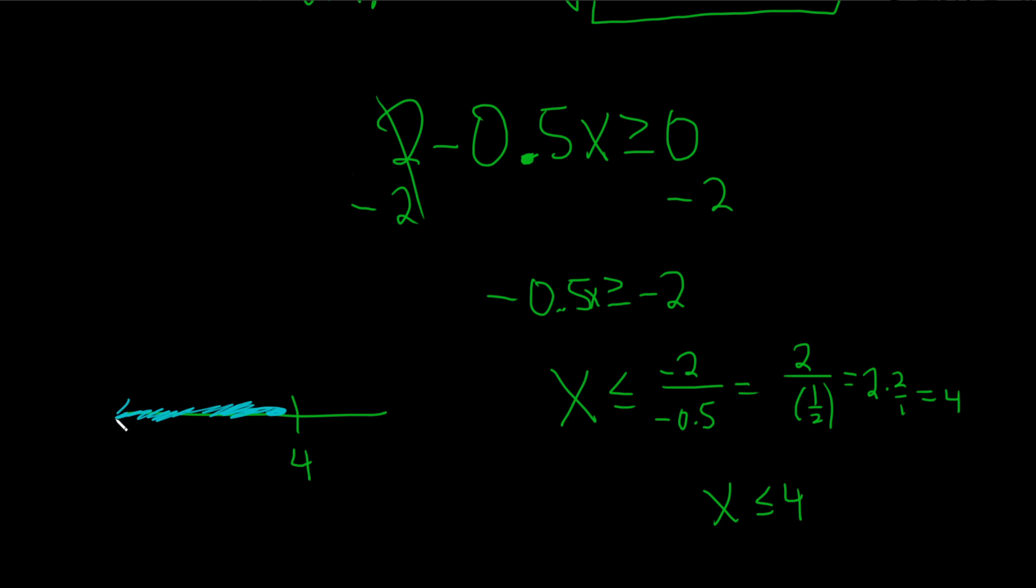And this here is an equality symbol, so because of that, because we allow for equality, we use a bracket and the bracket opens towards the shading. So the answer would be negative infinity to 4, and that would be the final answer. That's it.